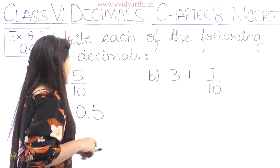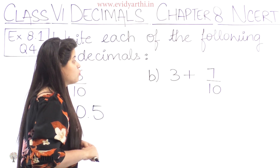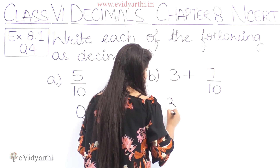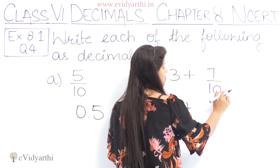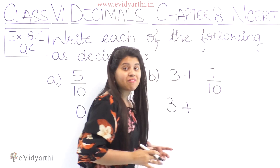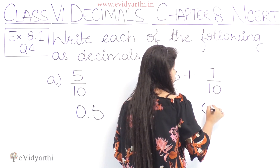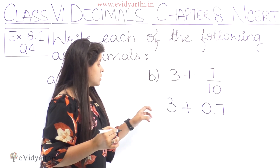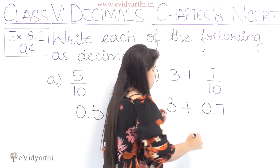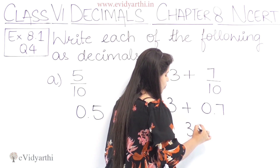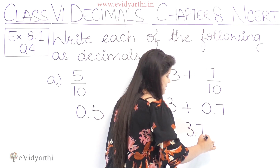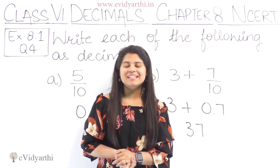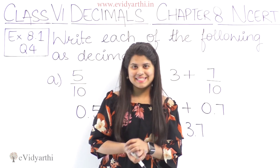Similarly, coming to the next part, we have 3 plus 7 upon 10. So 3 as it is, plus 7 upon 10. Now 7 upon 10 can be written as 0.7, right. So this is 3 plus 0.7 which is 3.7. So this was part A and part B — the answer is 3.7.